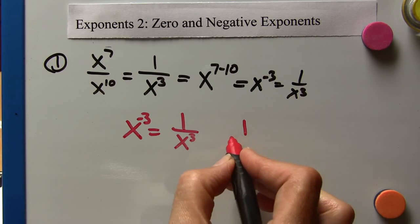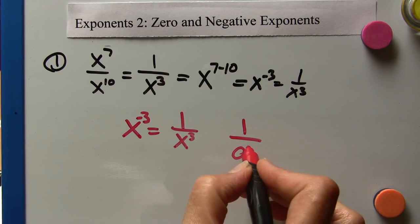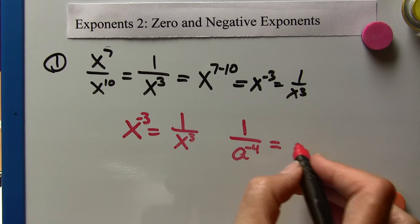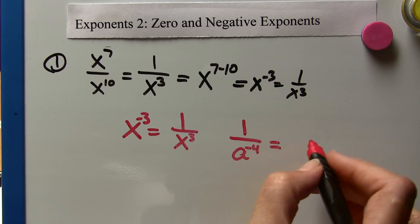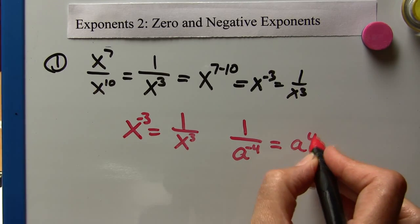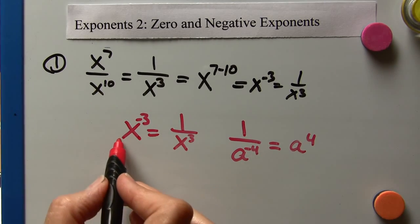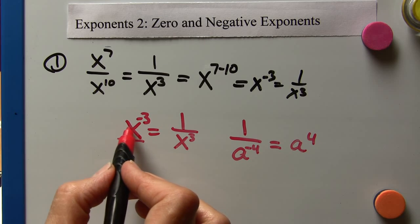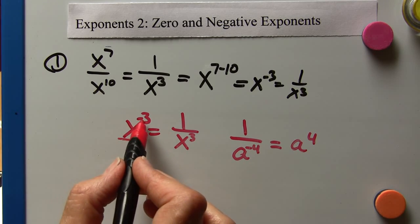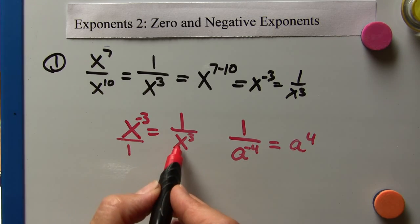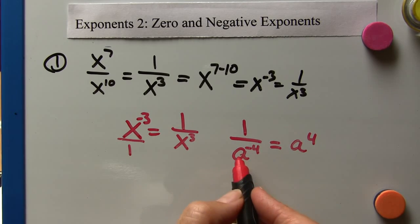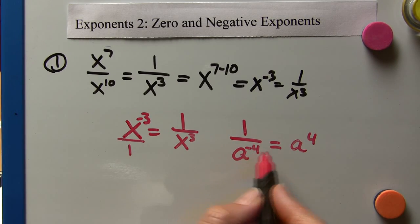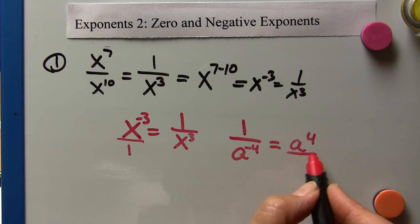Also, if we have one over a to the negative four, we can put that in the numerator — that becomes a to the fourth. So if we have a variable with a negative exponent in the numerator, put it in the denominator. If we have a variable with a negative exponent in the denominator, put it in the numerator. This is really technically over one.